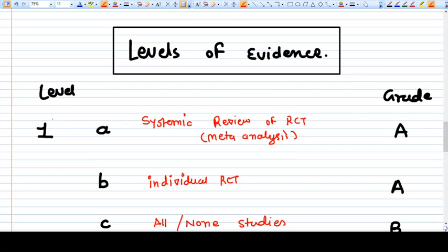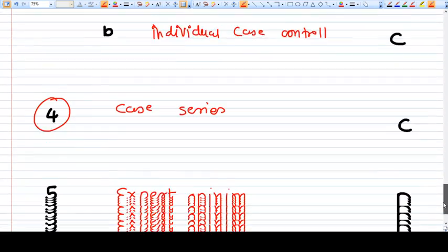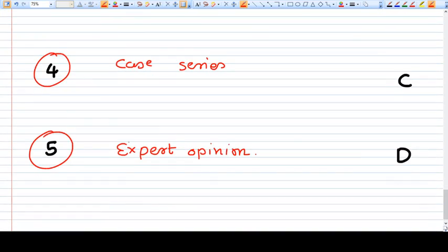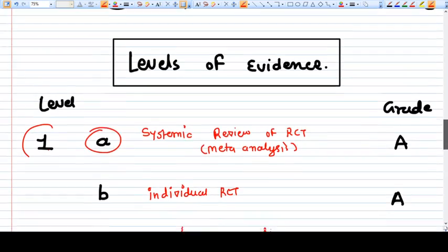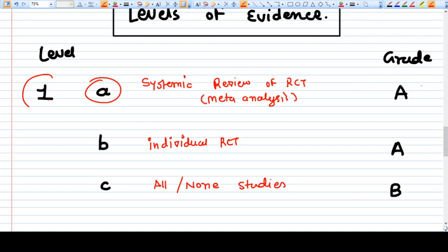The level 1a is the strongest evidence and level 5 is the weakest evidence. Now the grading are here on the right side.